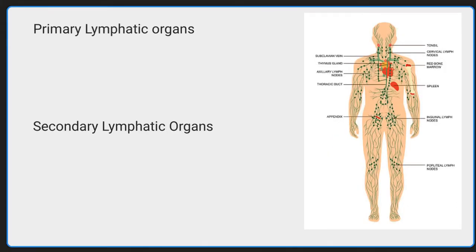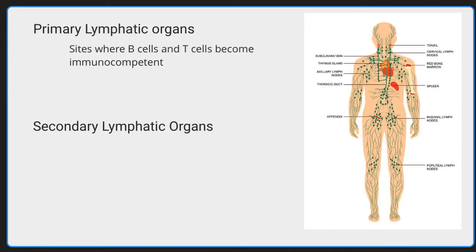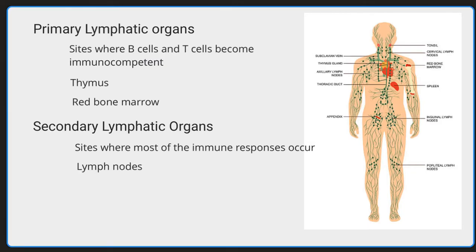Other important organs involved in immunity are the thymus, the spleen, and lymphatic follicles. These organs can be divided into primary lymphatic organs — the sites where stem cells divide and develop into mature, immunocompetent B cells and T cells — which include the thymus and red bone marrow. Secondary lymphatic organs and tissues are sites where most immune responses occur, and include the lymph nodes, the spleen, and lymphatic follicles. The lymphatic system, in conjunction with the adaptive immune system, gives rise to a very specific acquired type of immunity.